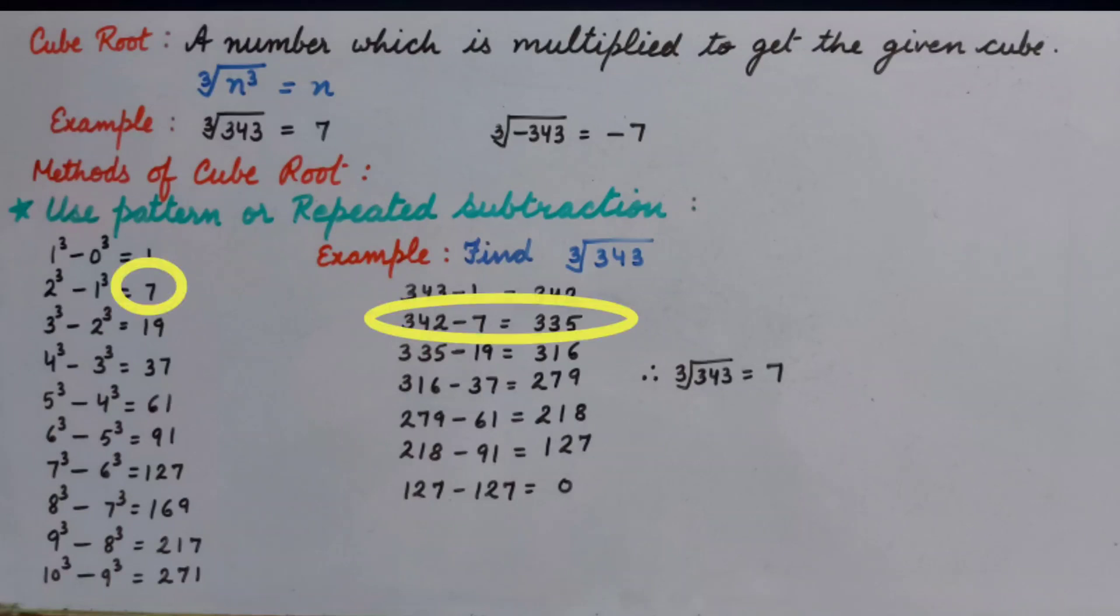From 335 we will subtract 19, that's 316. 316 minus 37, 279.